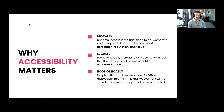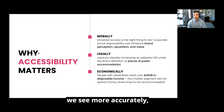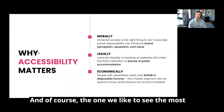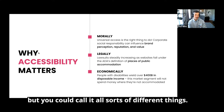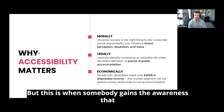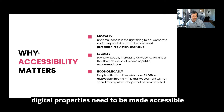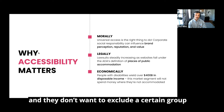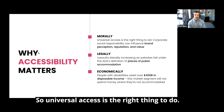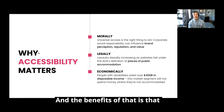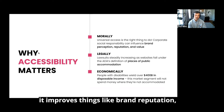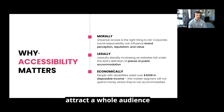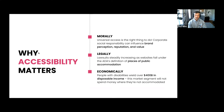We tend to look at digital accessibility in three different buckets — or more accurately, when people come to us they fit in one of these three buckets in terms of their motivation. The one we like to see the most we'll call morality — this is when somebody gains the awareness that digital properties need to be accessible to everyone, including people with disabilities. Universal access is the right thing to do, corporate and social responsibility can influence this, and the benefits include improved brand reputation and attracting a whole audience you might otherwise be leaving out.